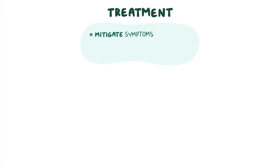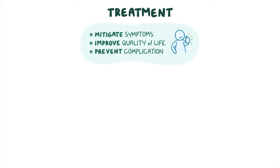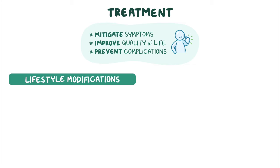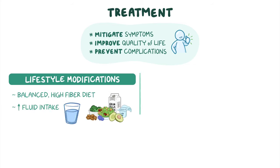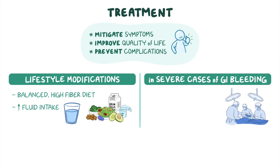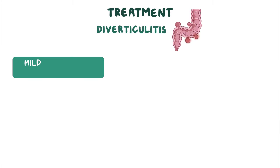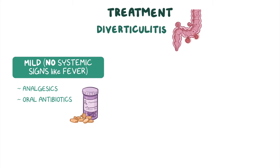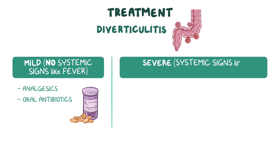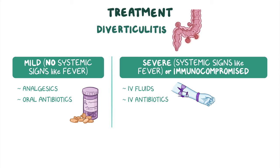Although there's no cure for diverticular disease, certain treatment options can be used to help mitigate some of the symptoms, improve the client's quality of life, and prevent complications. This involves lifestyle modifications like maintaining a balanced high-fiber diet and increasing fluid intake. In severe cases of gastrointestinal bleeding, surgical intervention might be required, like coagulation therapy and surgical clips, which are applied to the bleeding artery in order to seal it. Clients with mild diverticulitis not associated with systemic signs like fever are typically managed with analgesics or oral antibiotics. For severe diverticulitis with systemic signs like fever, as well as for clients that are immunocompromised, intravenous fluids and intravenous antibiotics might be administered. Finally, surgical intervention is required for clients who develop serious complications.